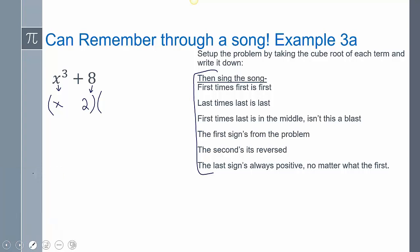I'm trying to warm up here. So, first times first is first. Last times last is last. First times last is in the middle, isn't this a blast? The first sign's from the problem. The second's it's reversed. The last sign's always positive no matter what the first. First, and it's factored. It's done. And you heard my beautiful voice. Double positive. Here we go. Next one.